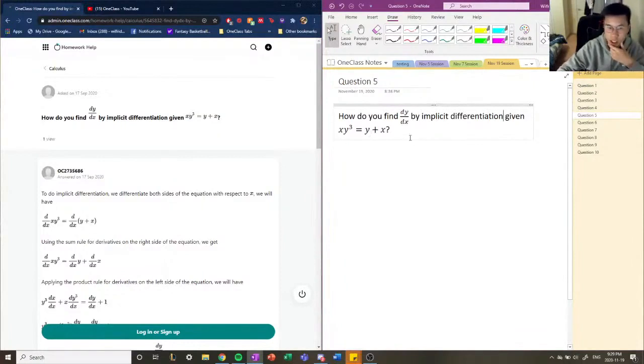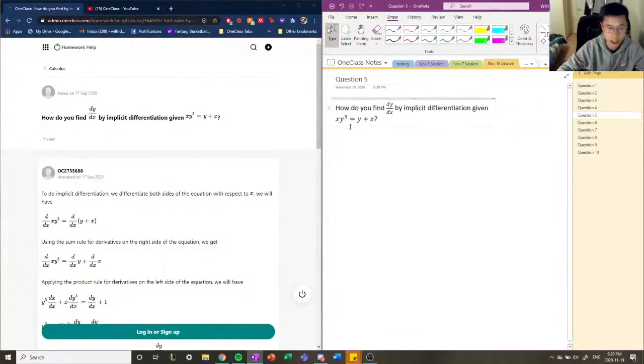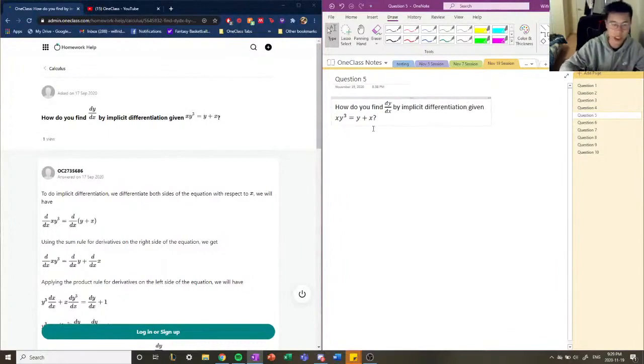Implicit differentiation is a different way of differentiating functions when you have a function that is not easily explicitly differentiated. That means that the y is on one side and the x is on the other side. So you see here that it's very hard to isolate for y, so we're going to use implicit differentiation instead.